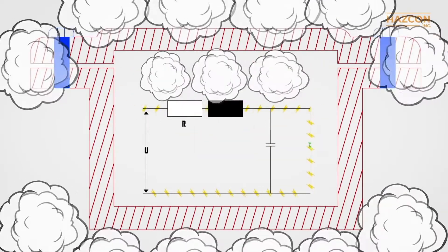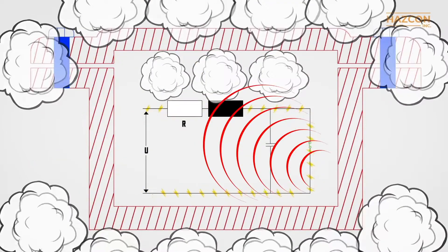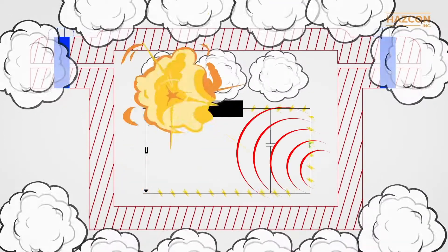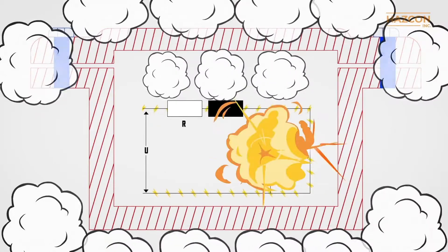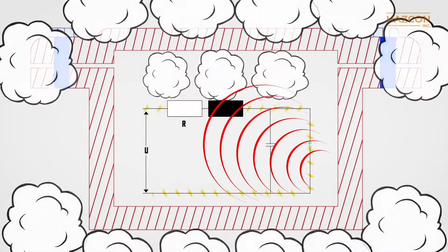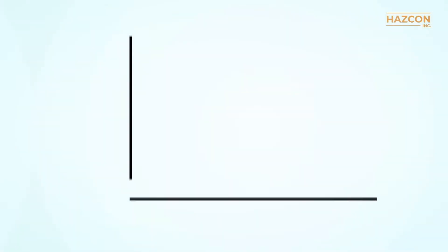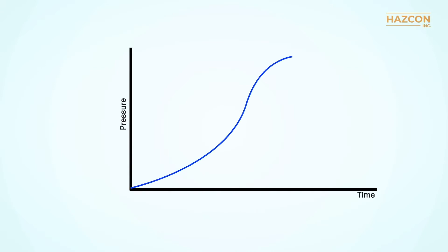Pressure is one of the expected outcomes whenever there is an explosion. When there's an explosion inside an enclosure, pressure rises inside it, and enclosures must be designed to withstand such pressure. This pressure rise can be predicted, and its rise can be plotted on a graph such as this.